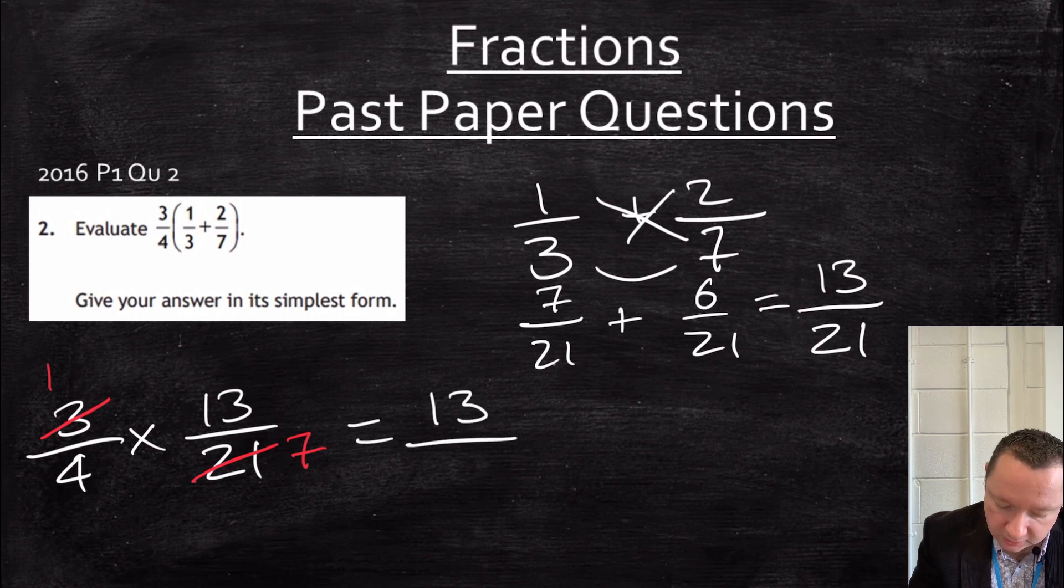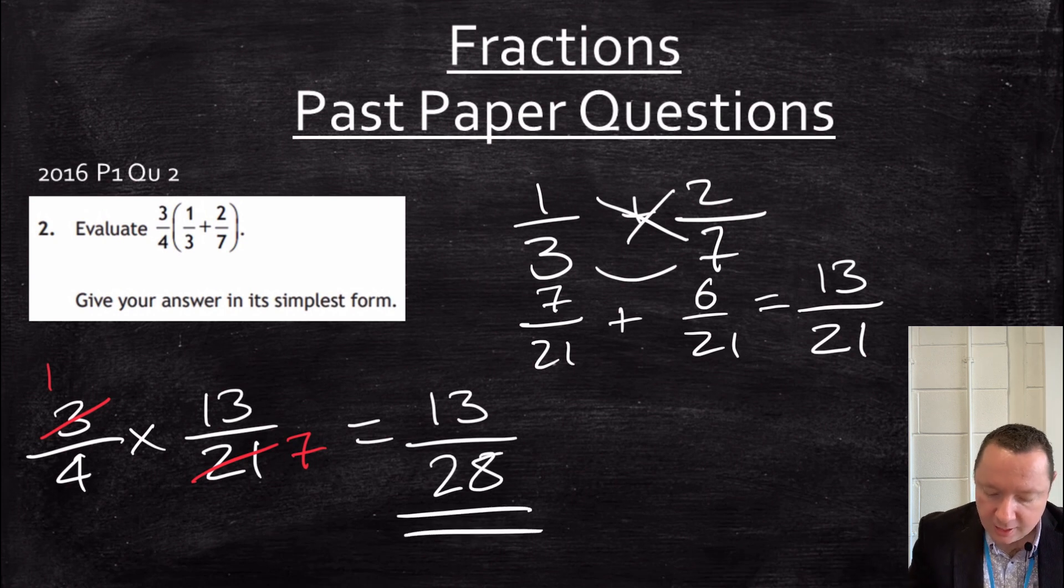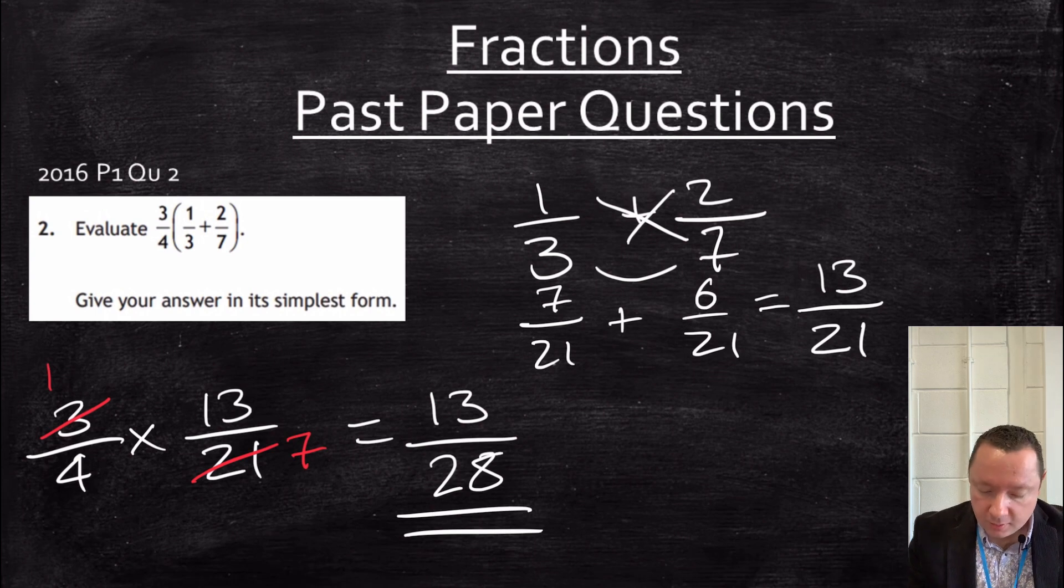So that means we've got one times 13, and we've got four times seven is 28. 13 out of 28. Just double check if there's any more simplification I can do. I know there isn't, but there's no numbers that go into 13 and 28, so I'm done.